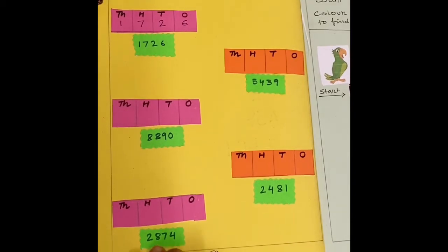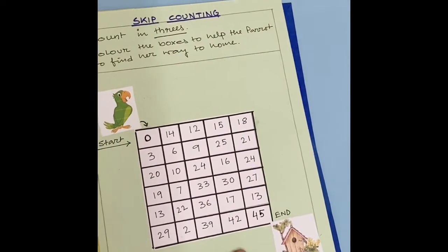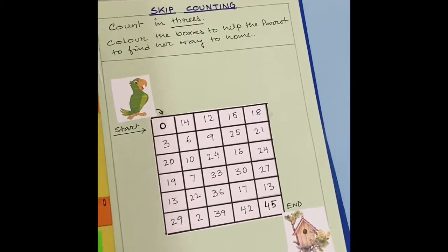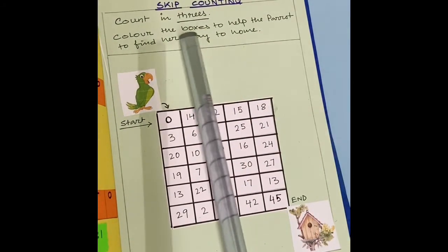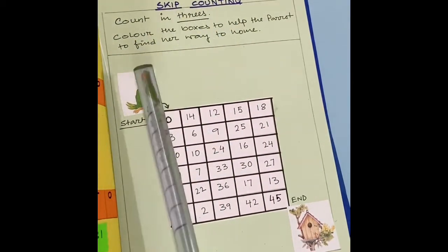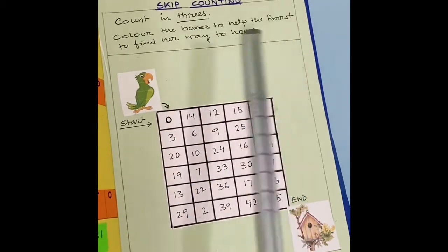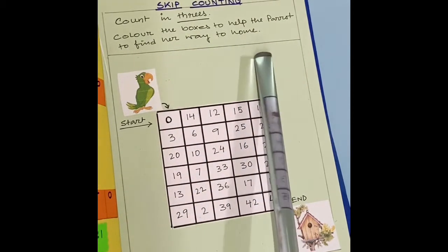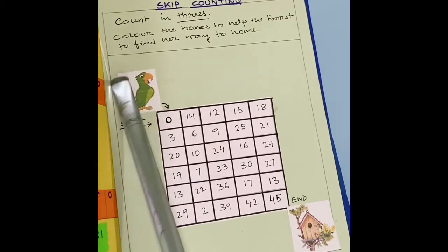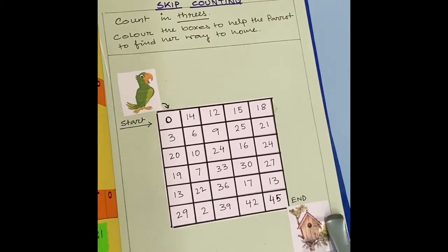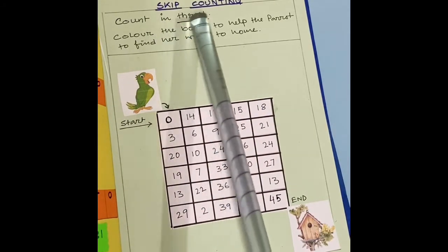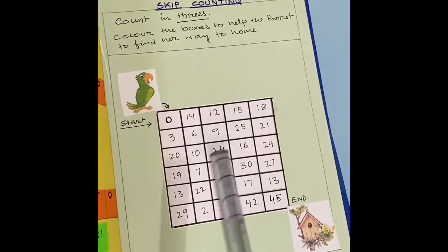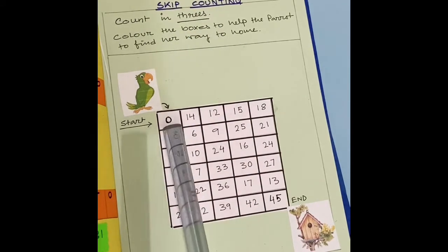Now come to the next page. That is page number 2. Here it is skip counting. Count in threes. Colour the boxes to help the parrot to find her way to home. This is a parrot and this is her home. Now you have to skip count by 3. So you have to start from here. That is 0.